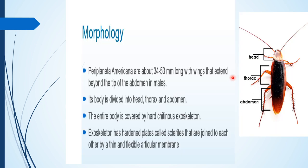Morphology. Periplaneta, as I have already mentioned, is around 3 to 4 inches long, or 35 to 53 mm long, with wings extending beyond the tip of the abdomen. The body is divided into head, thorax, and abdomen — these three regions. The entire body is covered by a chitinous exoskeleton. The exoskeleton is made of hardened plates, and each plate is attached to a small part of the particular membrane.